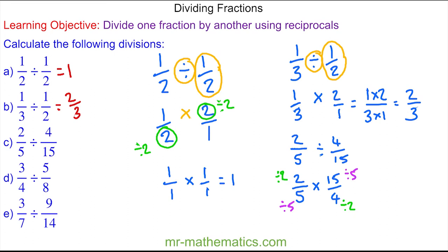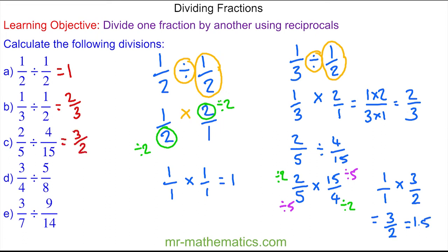So now we have: two divided by two is one, five divided by five is also one, multiplied by fifteen divided by five which is three, and four divided by two which is two — giving us three over two. We could also write this as 1.5. You can pause the video and try questions d and e, then resume when you're ready.